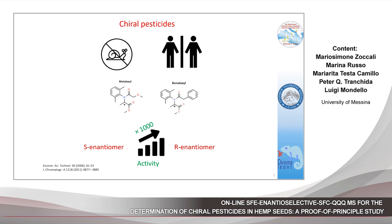Pesticides are a heterogeneous class of contaminants that present a wide difference in both molecular structure and chemical characteristics. Many commercial pesticides — approximately 25% of the existing agrochemicals — are characterized by one or more chiral centers, leading to a high number of enantiomeric forms. It is well known that enantiomers of a chiral molecule can possess different activities.